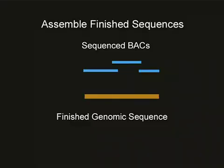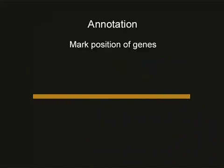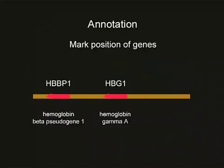So if finishers put the sequence fragments together to form a BAC, who puts all the BACs together? Members of Analysis Core. They are responsible for confirming the placement of the individual BACs in the original map. They also annotate the finished sequence or label specific regions of the sequence with appropriate names or other identifying information.